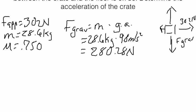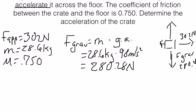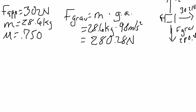We're going to plug in 280.28 down here and also write it up top. You may be asking why we can do that — it's because the object is not accelerating upward or downward, it's moving left to right. Therefore, the force of gravity is equal to the normal force, the upward force. Now that we know those two, we're left with the force of friction, and we need to calculate that.